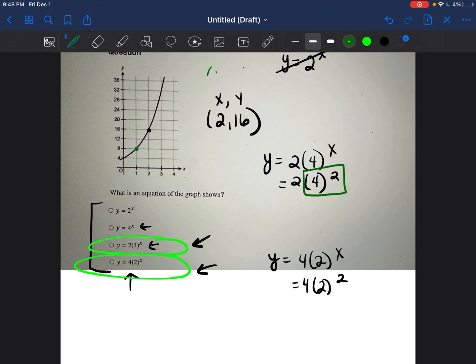So again, we're going to do the exponents first. 4 to the power of 2 is 4 times 4. 4 times 4 is 16. And then we're going to bring down the multiply by 2. 2 times 16 is 32. So y is equal to 32. Is that what we were looking for? No, we were looking for y is equal to 16. So this is not our equation.